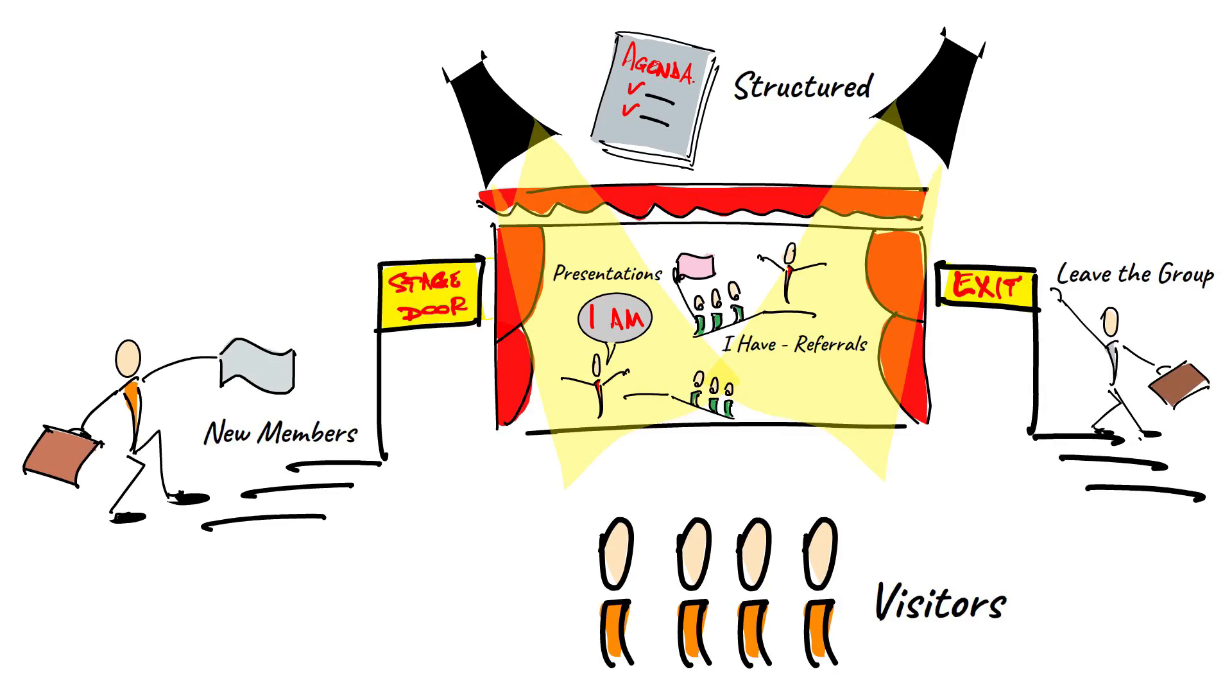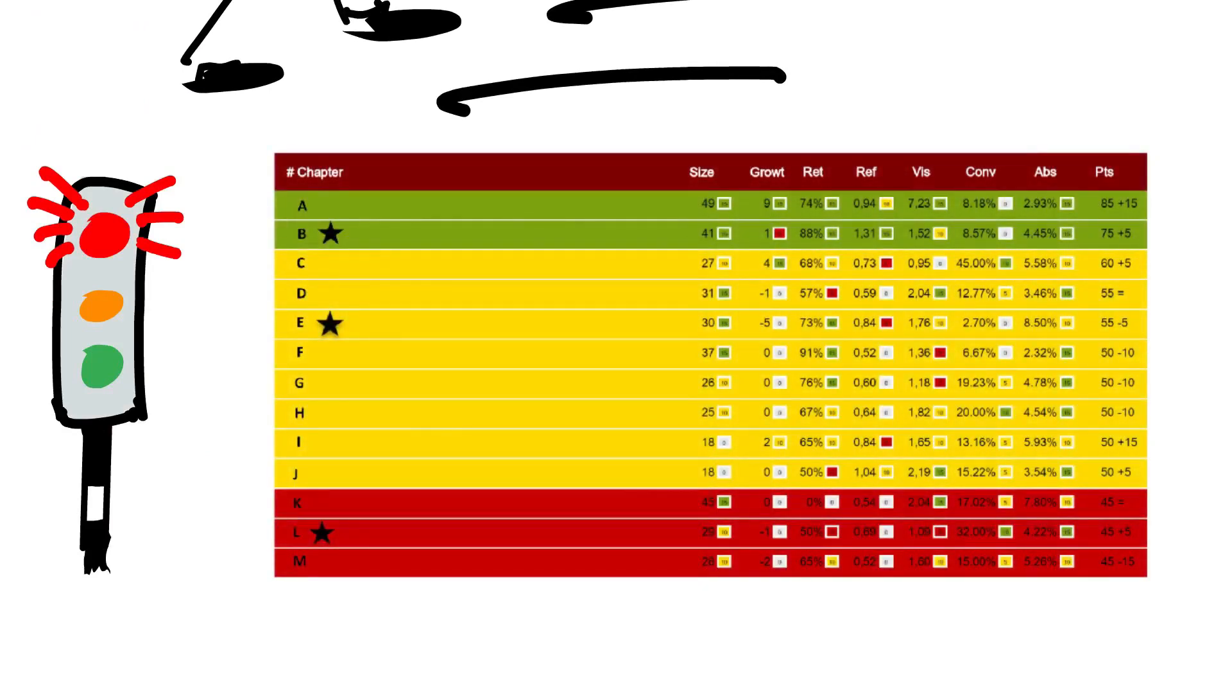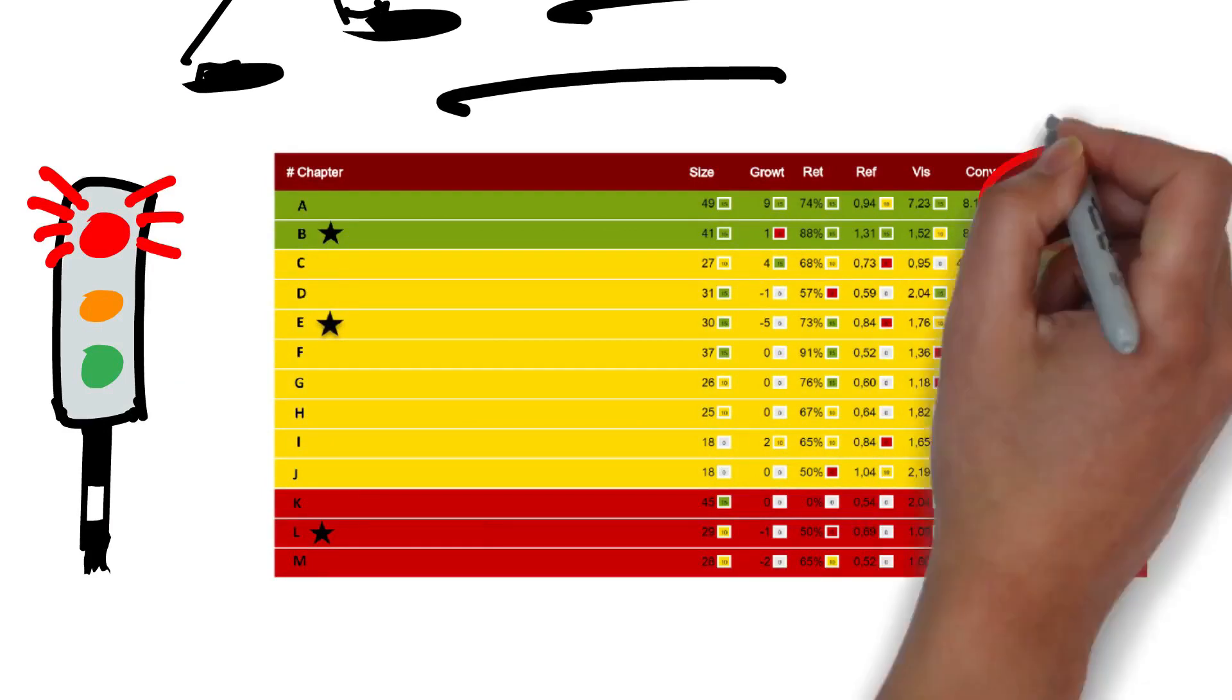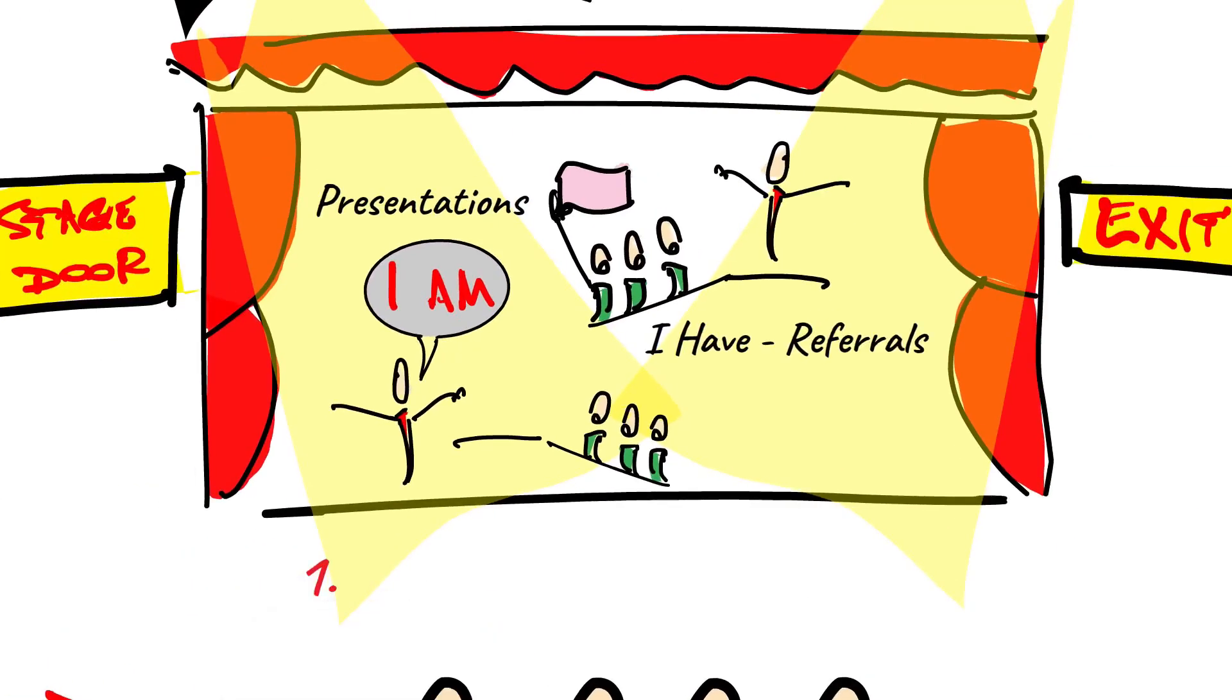Chapter Health is reported in Traffic Light Reports, a monthly report that summates the activity over six months on seven key performance indicators and expresses chapter health on a 0 to 100 scale. The seven indicators are as follows.